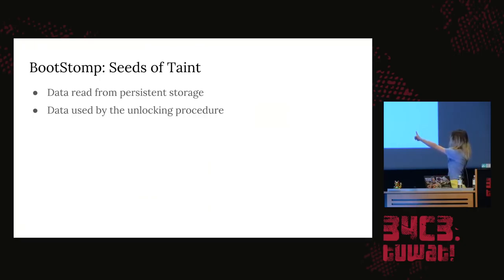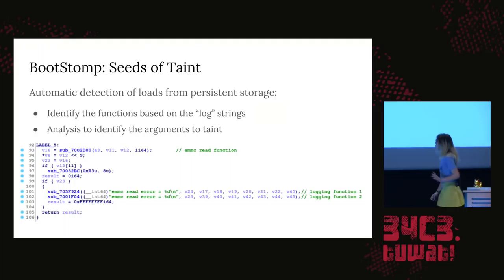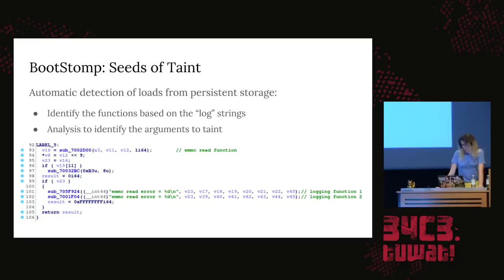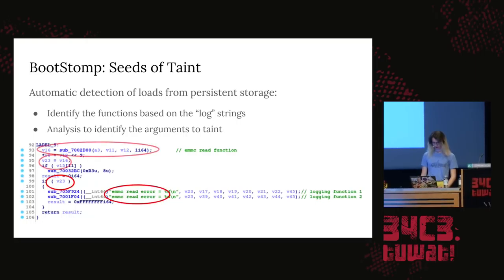The seeds for our taint analysis are for persistent storage and data used by the unlocking procedure. The heuristics we use identify reads from persistent storage. You can identify log messages and do a def-use analysis back from the guard condition on that block to its source, and you say that function must be the read. It's pretty simple and works surprisingly often. Of course, if this isn't enough, you can just manually analyze the firmware and provide where we read from persistent storage and what you should taint.